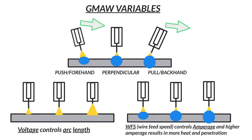Let's start at the top and take a look at the direction in which we weld, and that also includes the travel angle and work angle. We have a piece of metal here. You can see the nozzle from our MIG gun in different angles, all moving from left to right on the screen. We have a push forehand, a perpendicular, and then a pull backhand.